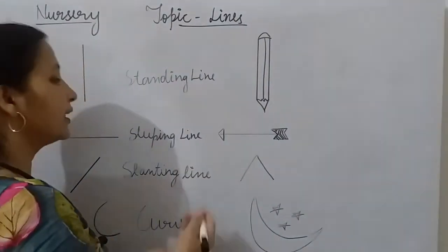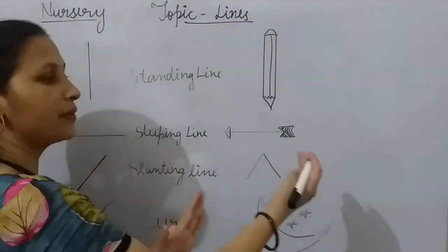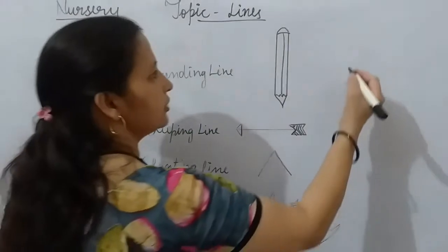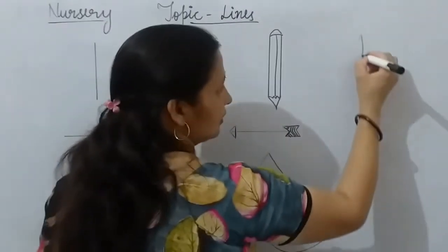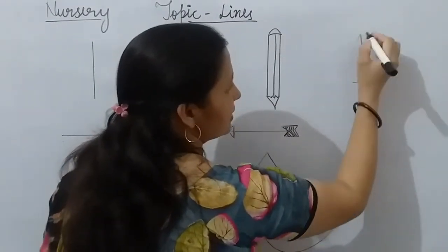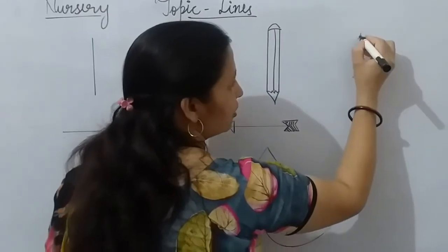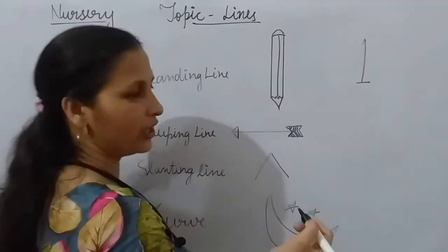Now we will see how to make these lines. We have made a standing line, what is it? One.